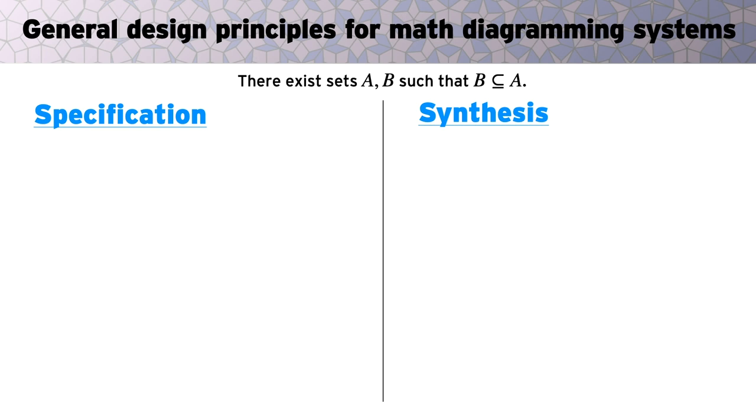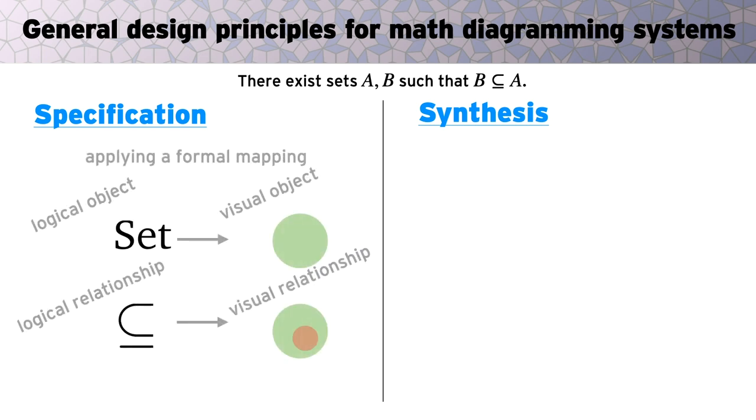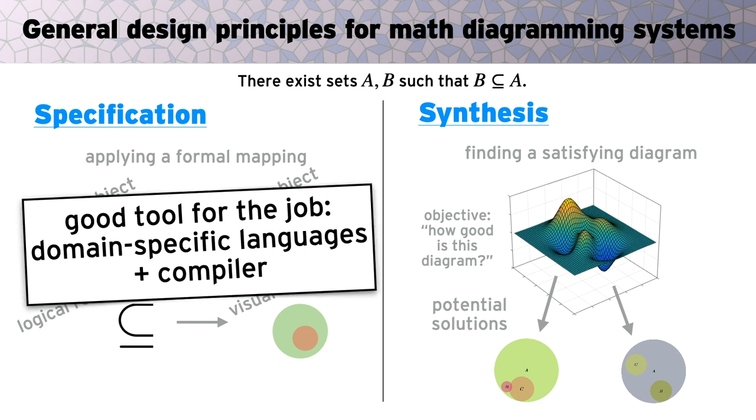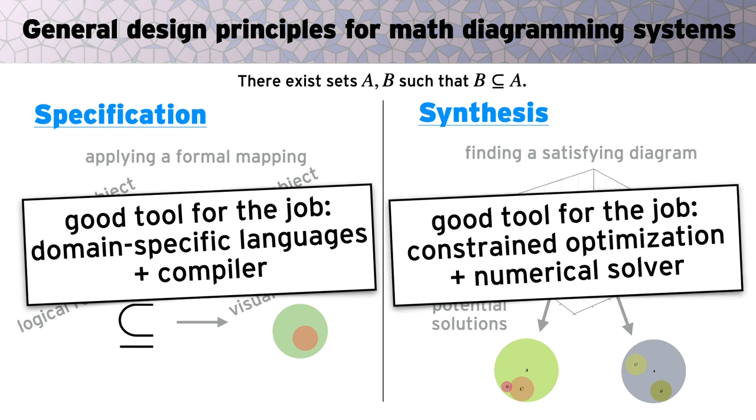So how do you encode this informal subjective process into a diagramming system? We split the process into two stages. In a specification stage, we model a diagrammer's internal mapping from math to visualization, using essentially a set of formal substitution rules. In the synthesis stage, we model the diagrammer's notion of how good a diagram is, using an objective function, plus a collection of constraints that must be satisfied. Domain-specific languages provide a natural way to specify this mapping, and a compiler can then use this mapping to translate mathematical statements into a constraint optimization problem. From here, numerical optimization is used to actually synthesize the diagram, automating the process of making iterative adjustments.